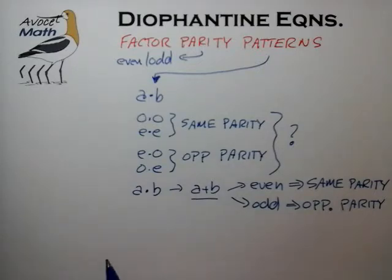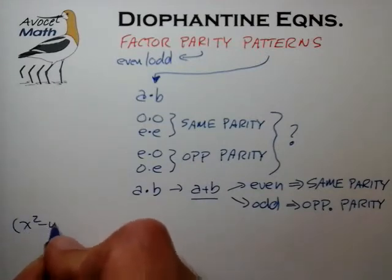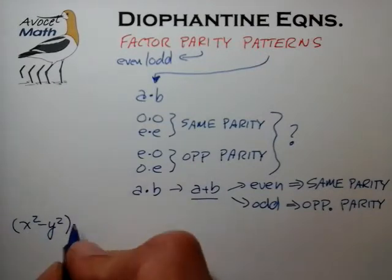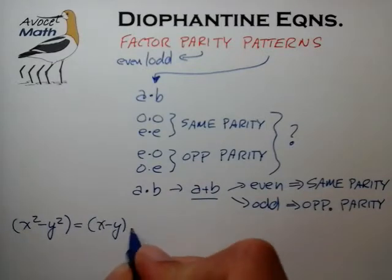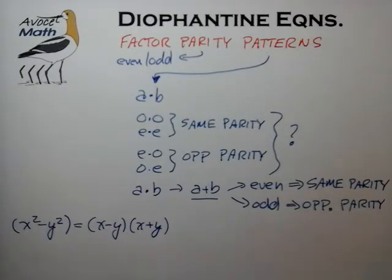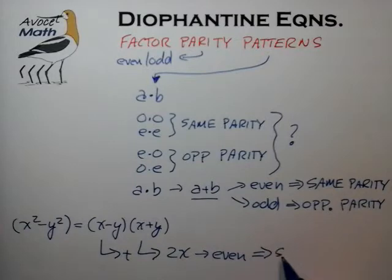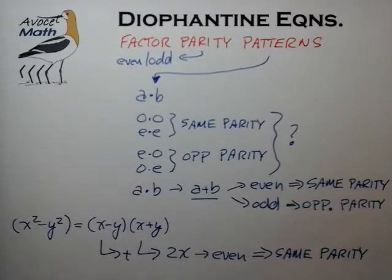Probably the most common example of this type of factor pattern is when we're trying to decide how to factor the difference of squares, in which case we have (x minus y)(x plus y), and we're trying to conclude something more insightful about these two factors. One of the tests we can do is the test we just described: take the two factors, add them together, and you find that equals 2x — which of course is an even number. From that, we can conclude that the two factors must be of the same parity.